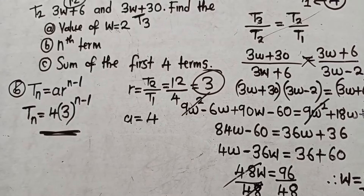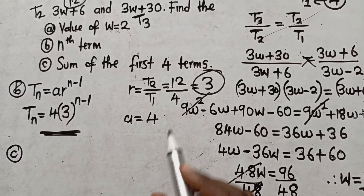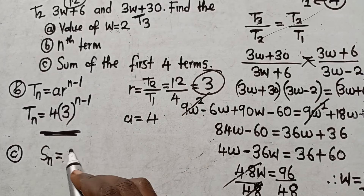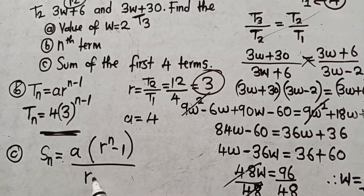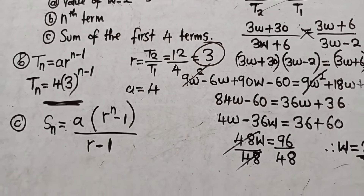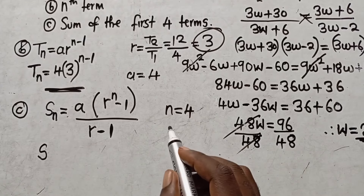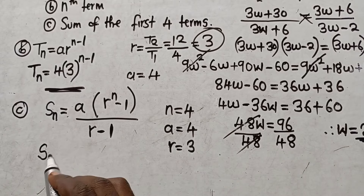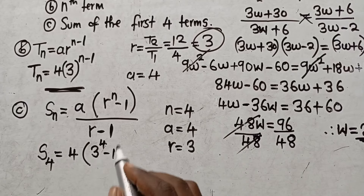To find the sum of the first four terms: since the common ratio is greater than one, we use the formula Sn = A times (R to the power n minus 1) divided by (R minus 1). Here n equals 4, A equals 4, and R equals 3. Substituting: S4 equals 4 times (3 to the power 4 minus 1) divided by (3 minus 1).